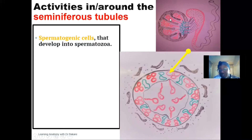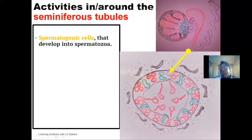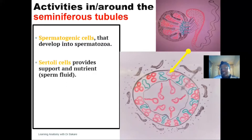In the wall of the seminiferous tubules, there are two types of cells. The first is the spermatogenic cell, which further develops to become spermatozoa; as they develop, they are released into the lumen of the seminiferous tubules. The second is the Sertoli (satellite) cell, which produces support and nutrients for the spermatogenic cells by secreting fluids that nourish and protect them.